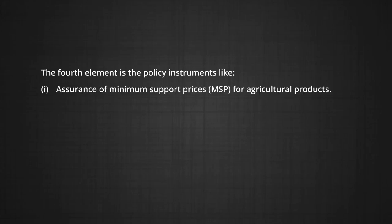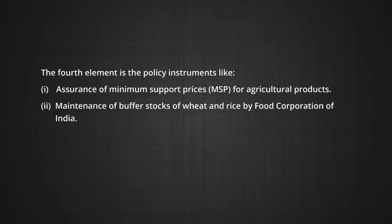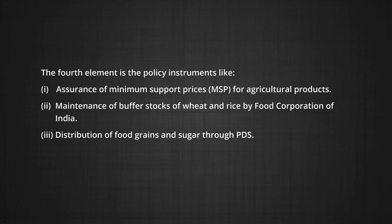The fourth element is policy instruments like: number one, assurance of minimum support price (MSP) for agricultural products; number two, maintenance of buffer stocks of wheat and rice by the Food Corporation of India; and number three, distribution of food grains and sugar through the public distribution system (PDS). These instruments aim at protecting farmers' income and providing food grains at a subsidized rate to the poor. However, despite government intervention, private trade — particularly by moneylenders, rural political elites, big merchants, and rich farmers — predominates agricultural markets.